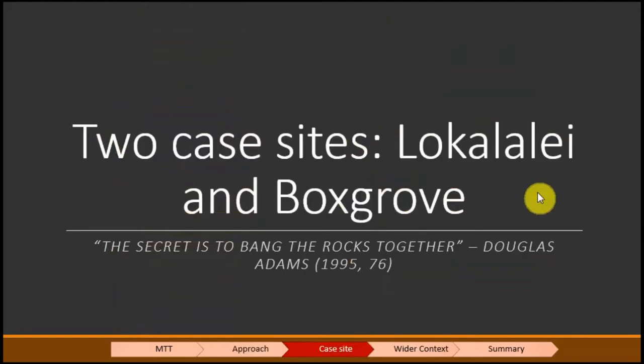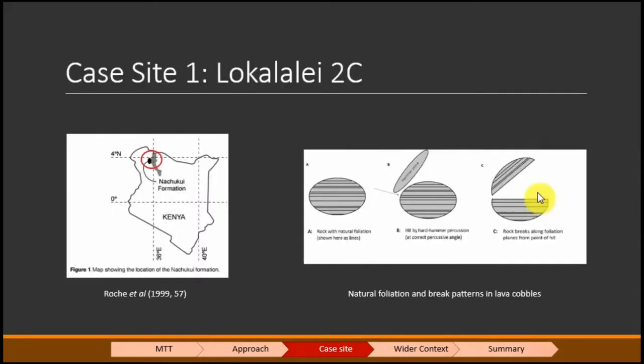My two case sites: I did a diachronic pilot study so that means that they were spatially distinct, temporally distinct, species distinct, although there is no known species for Lokalalei so I chose to leave out species because that makes a lot of mess when you have assumptions for one and not the other. And importantly technologically distinct. Lokalalei is Oldowan and Boxgrove is Acheulean. They are very different.